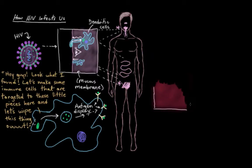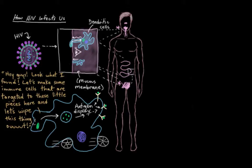And really importantly, while they're doing all this breakdown and displaying of foreign invader antigens, they're also on the move. They've picked up shop and they're already on their way through the bloodstream or through the lymphatic system on their way to one of our many lymph nodes — they usually go to the closest one.